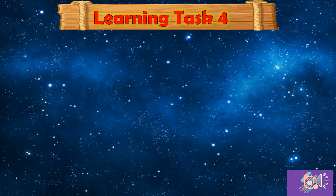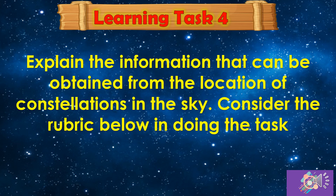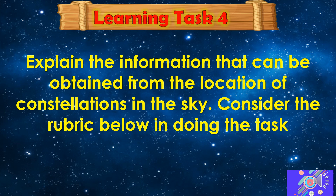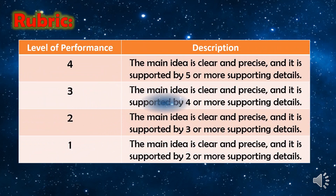For Learning Task 4, explain the information that can be obtained from the location of constellations in the sky. Consider the rubric below. You will get four points if the main idea is clear and precise and supported by five or more supporting details; three points if supported by four or more details; two points if supported by three or more details; and one point if supported by two or more supporting details.